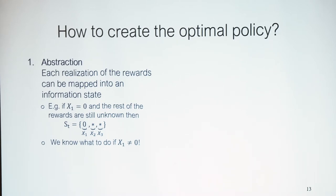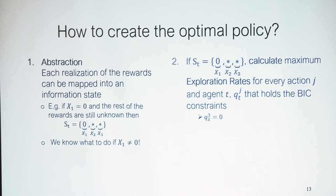One interesting observation is that we already know how to handle cases where rewards are only minus one or plus one. If it's any other information state — for instance, action one received plus one — the planner already knows what to do and recommends accordingly. So the only interesting case with three actions and discrete rewards is the information state (0, *, *). In this case, we calculate the maximum exploration rates for every action j and every agent t: the highest possible probability the planner can recommend agent t to explore action j while still being Bayesian incentive compatible.